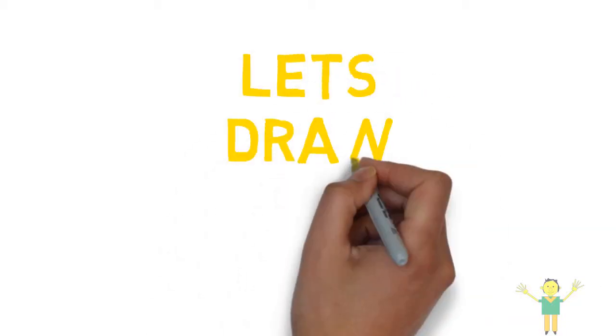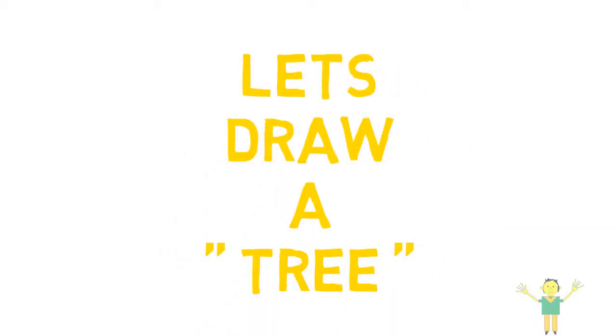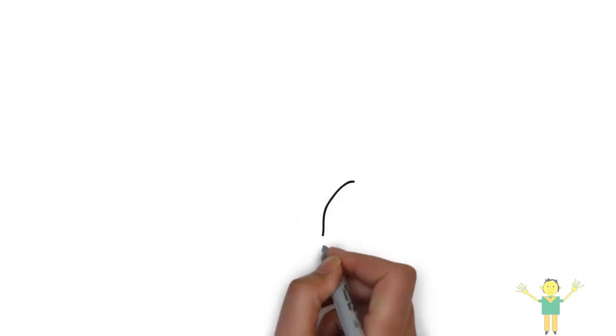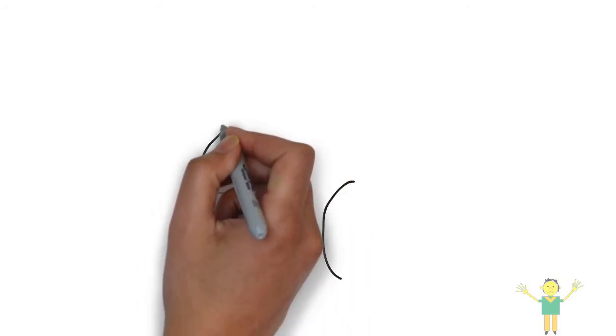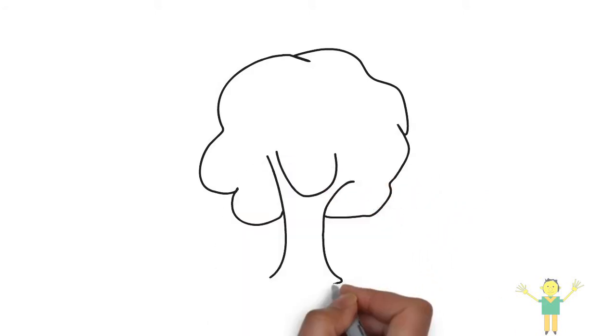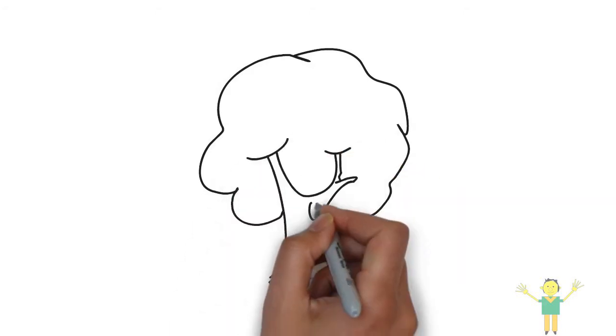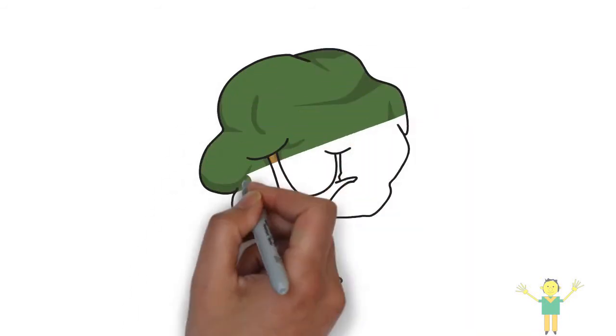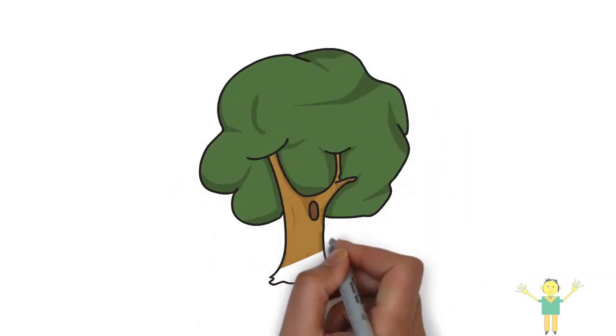Let's draw a tree. Trees are the best friends of humans. They purify air and provide fruits, woods etc to human beings. They provide food for birds and animals also. This is tree.